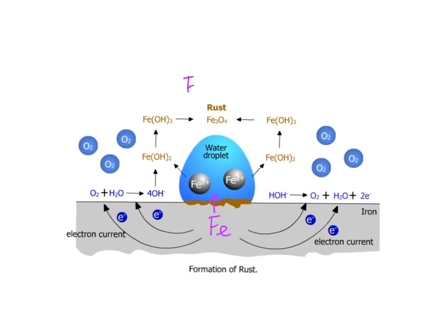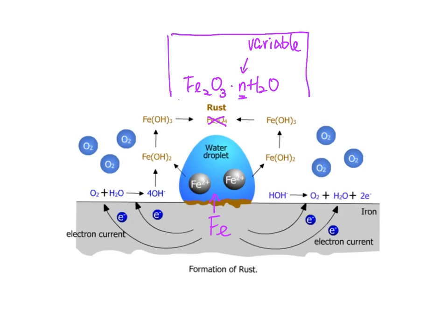One important modification: the rust in our syllabus is iron(III) oxide with nH2O — written as Fe2O3·nH2O. Here n is a variable, meaning it can be different whole numbers, such as 1 or 2. This is what we need to learn about the chemistry of rusting.